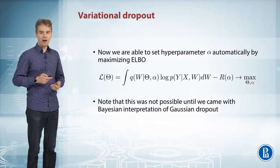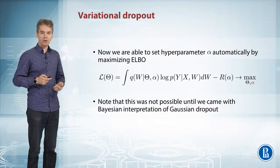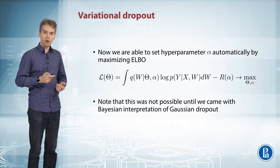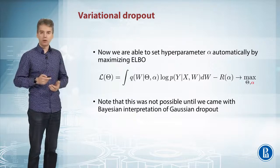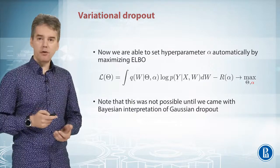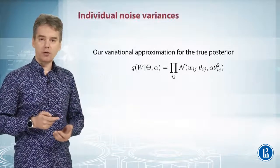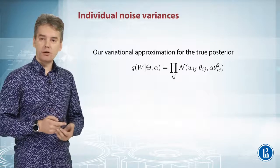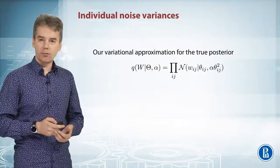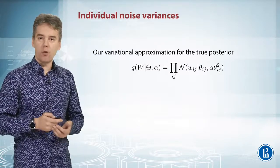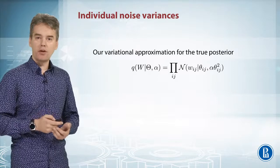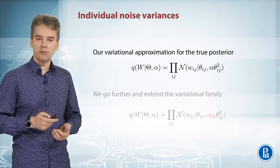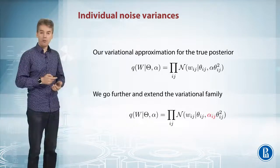We may obtain non-zero values of α only if we optimize both terms: the data term and our regularizer. So our variational approximation is a fully factorized Gaussian distribution over all weights w, with mean θ and variance αθ². But we may go even further.